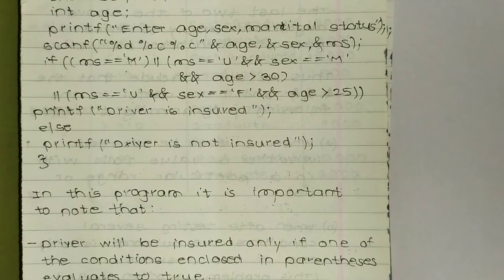So here we are giving whether it is insured or not insured. In one if statement we have mentioned all of the conditions: marital status should be married, or it can be unmarried and male and age should be more than 30. All of these are mentioned within logical operators.